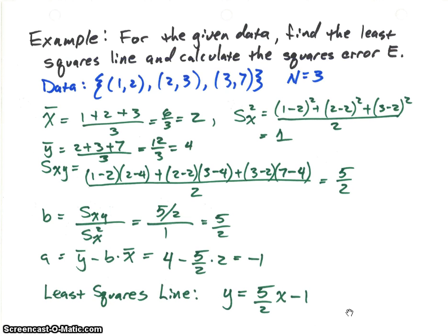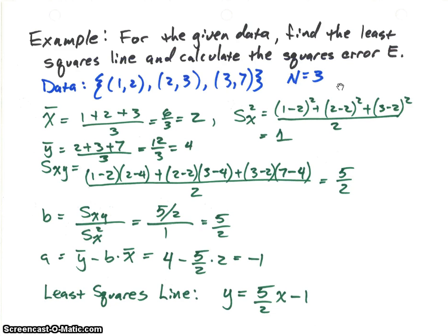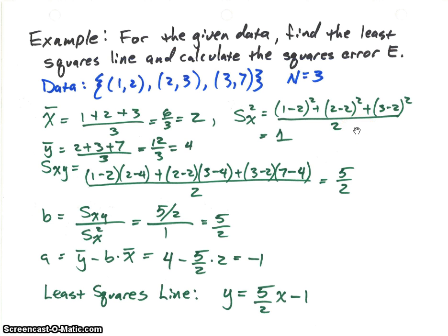As an example, let's take some data nearly on a line. The x values are 1, 2, and 3, and the y values are 2, 3, and 7 correspondingly — three values in this data set. We're going to calculate the least squares line for this data. First, we calculate the mean of x and the variance of x. The mean is 2. For the sample variance, we subtract that mean from each data value, square each result, and divide by 2, giving a sample variance for x equal to 1.